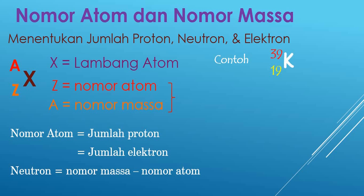Sehingga atom kalium dapat ditulis seperti ini. Nomor atomnya, kita lihat angka yang di bawah, yaitu 19. Kemudian nomor massa dapat kita lihat angka yang di atas, yaitu 39.